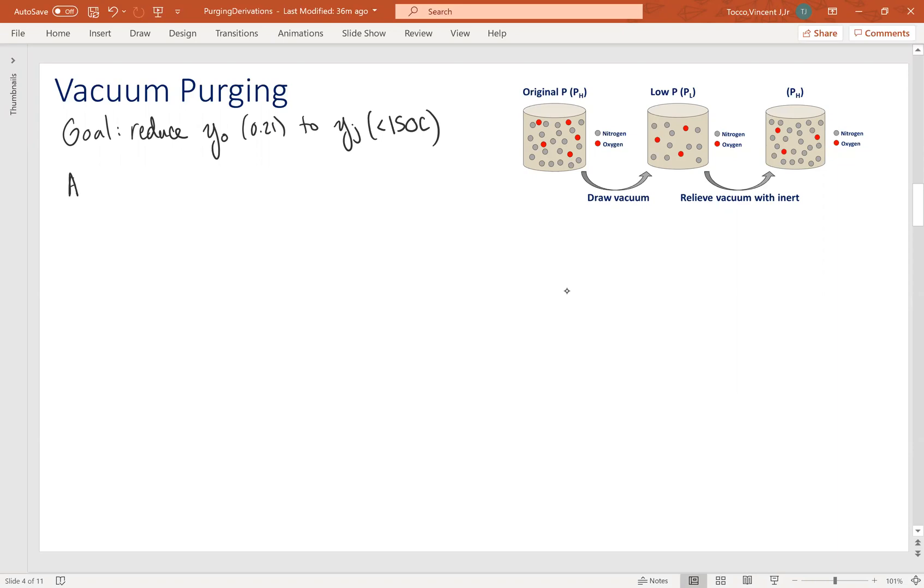So, at the start, in step one, at start, we can calculate how many moles of gas we have and what the composition is. We know that at the start Y-naught is 0.21, because it's air. We also know that we have a certain pressure. So, P-high is what they call it, is the high pressure. If we can measure the volume of the tank, so we know V and we know T, because we can measure the temperature outside, we could say that the number of moles of gas oxygen, NO2, for the high conditions is equal to pressure high volume divided by RT. We can then say that the number of moles of oxygen, NO2, for the high conditions is equal to Y-naught times NH.